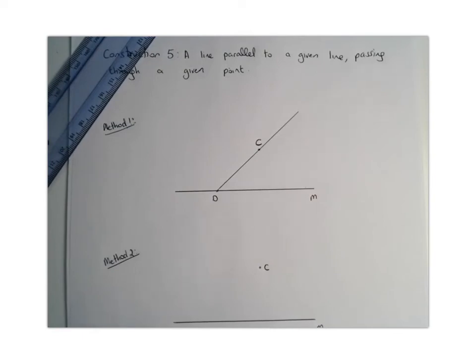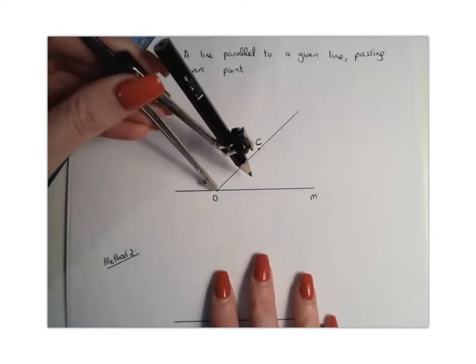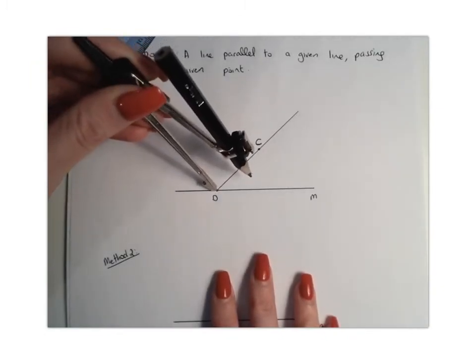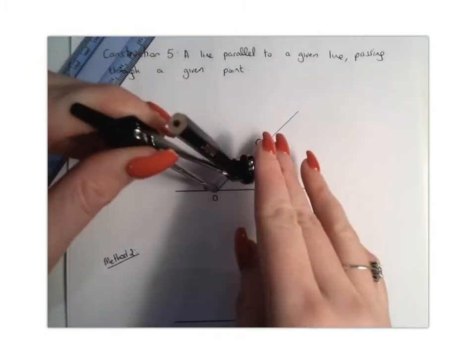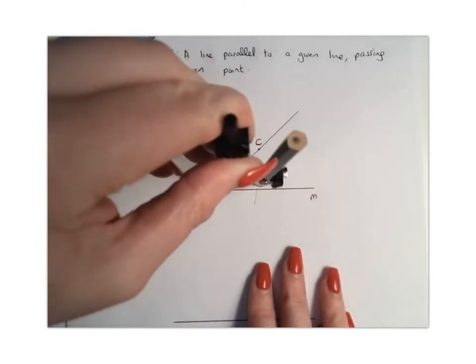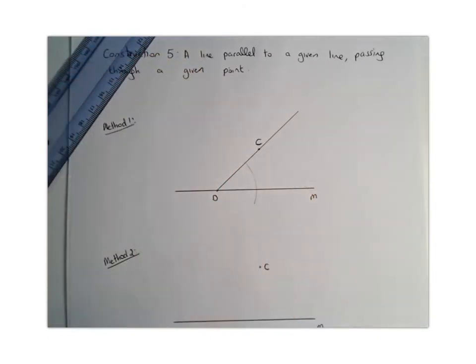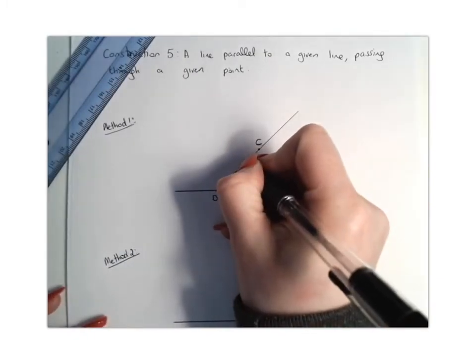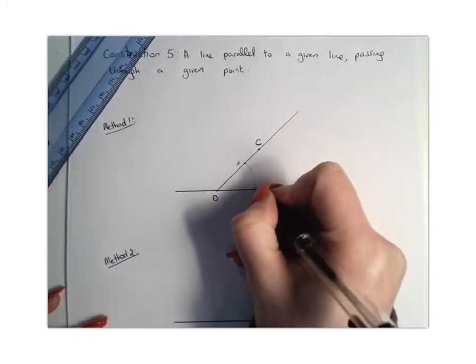Step two is we're going to place our compass at our point of intersection between the two lines, which we labelled D, and we're going to create an arc that touches off both lines. And I'm going to label that X and Y.